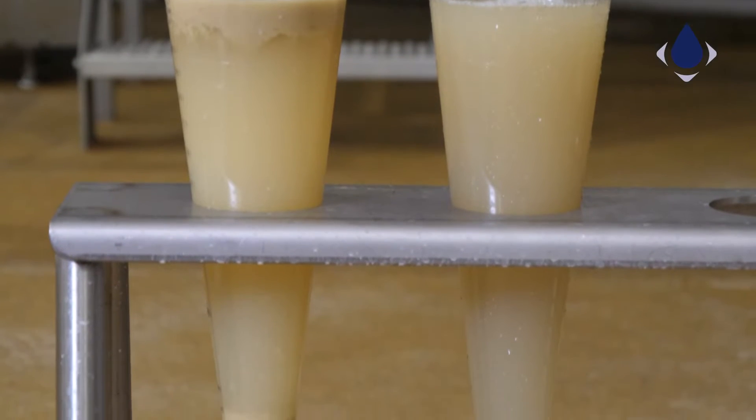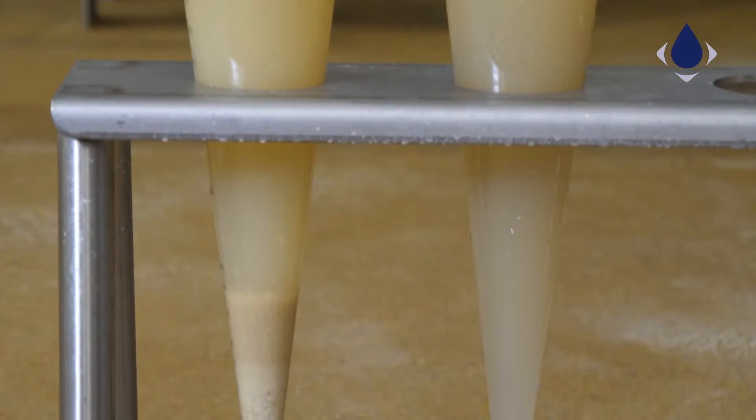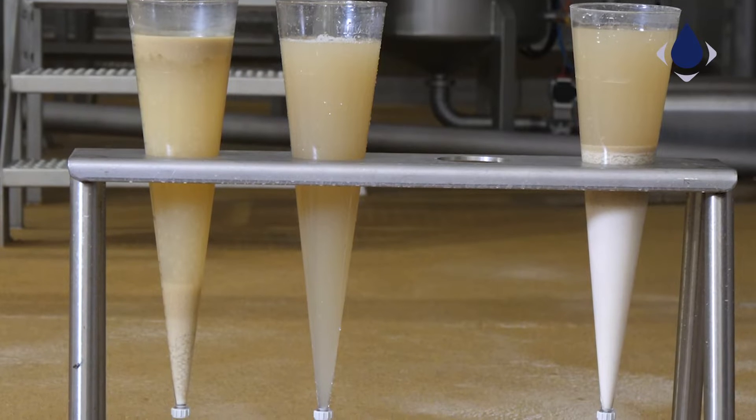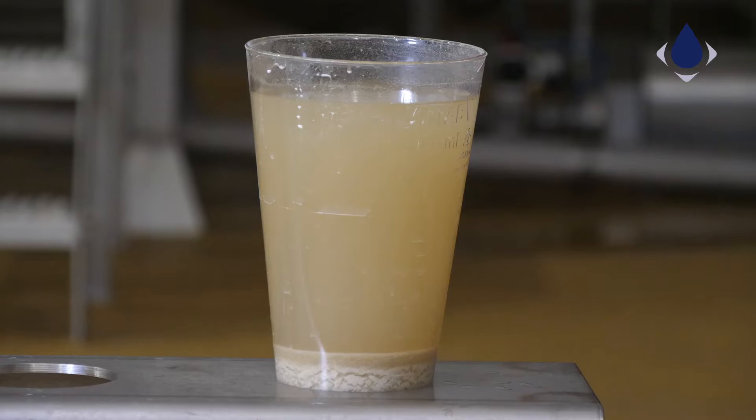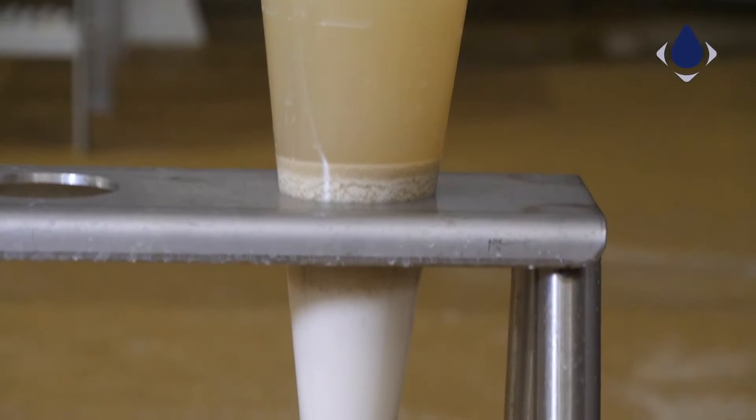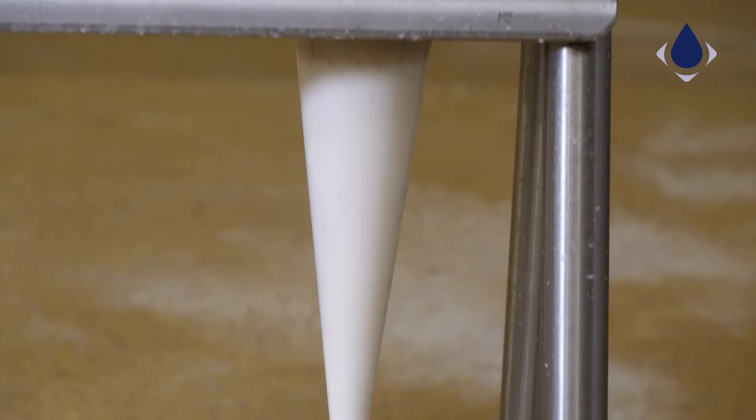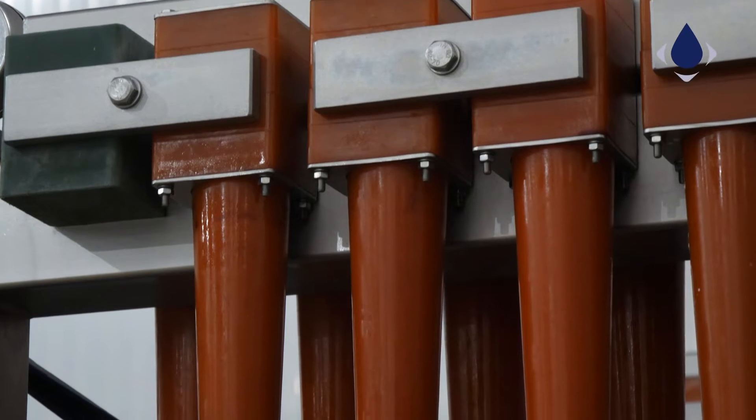On the left hand side, you see the starch rich processed water. In the middle, you see clean processed water without starch. On the right hand side, you see the concentrated starch from the hydrocyclone.